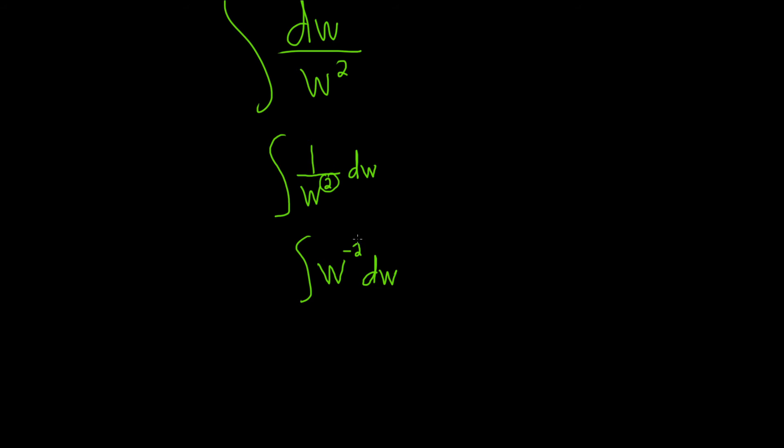you take the exponent here and you add 1 to it. So you write w to the negative 1, because negative 2 plus 1 is negative 1. And then you also divide by that number.